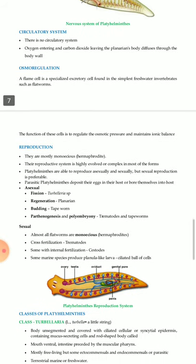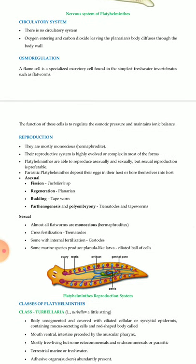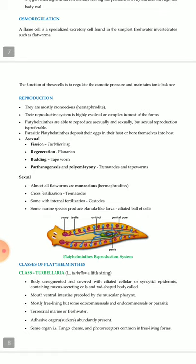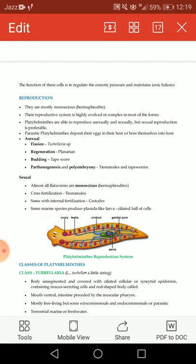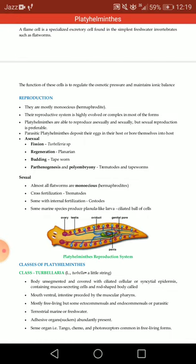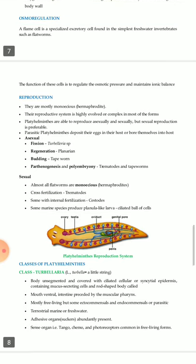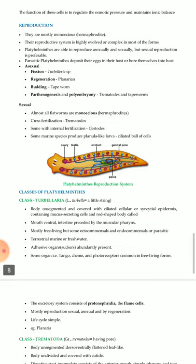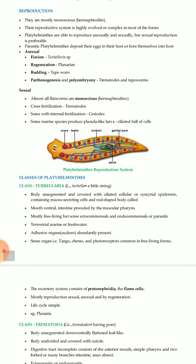Circulatory system: there is no circulatory system; oxygen entering and carbon dioxide leaving the planarian body diffuses through the body wall. Osmoregulation: a flame cell is a specialized excretory cell found in the simplest freshwater invertebrates such as flatworms; its function is to regulate osmotic pressure and maintain ionic balance.